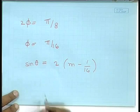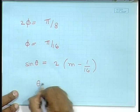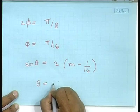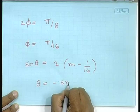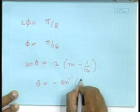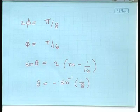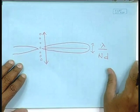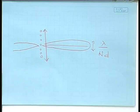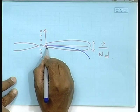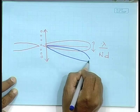The maxima will now occur at an angle sin⁻¹(−1/8). So by introducing a phase difference between each of these antennas, you can shift the direction in which the maxima occurs — in this case it will shift the beam downward.